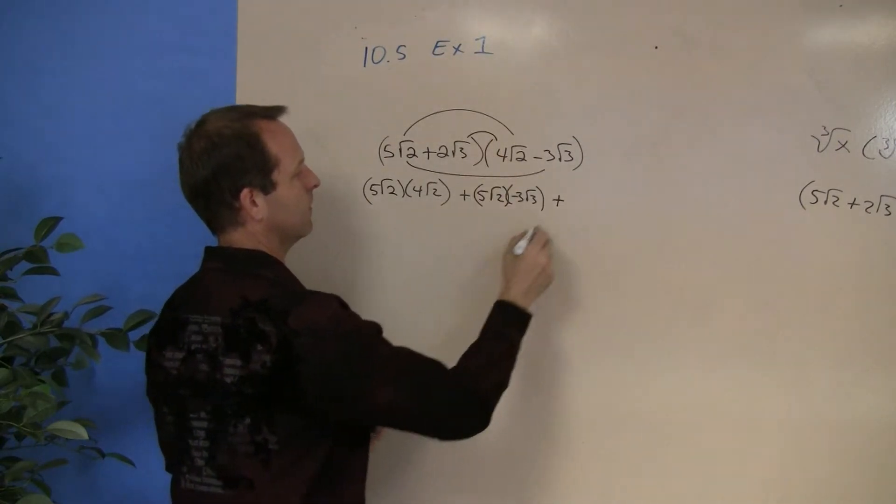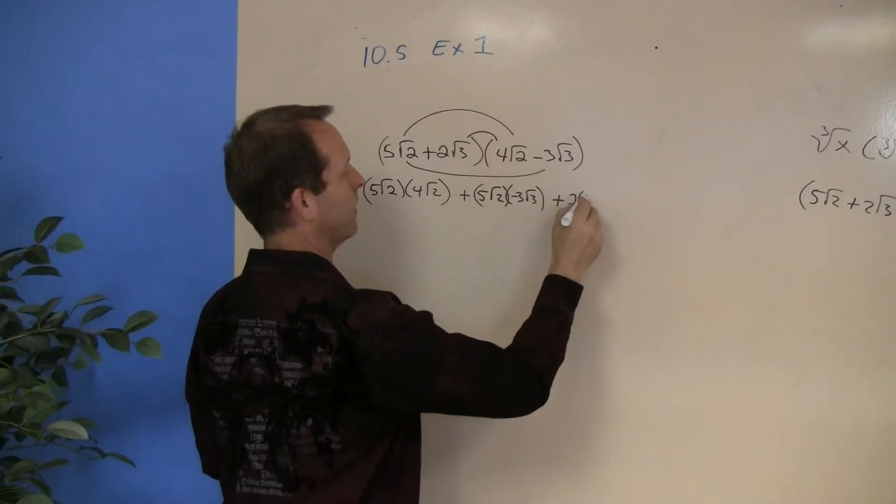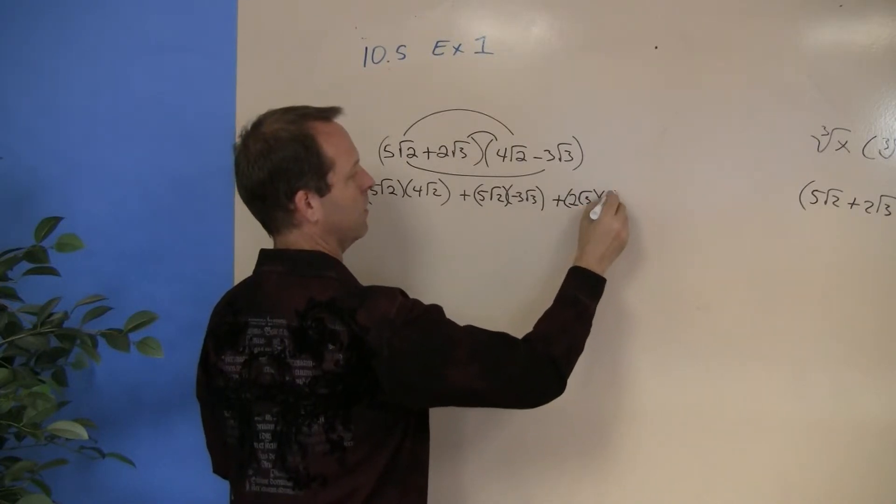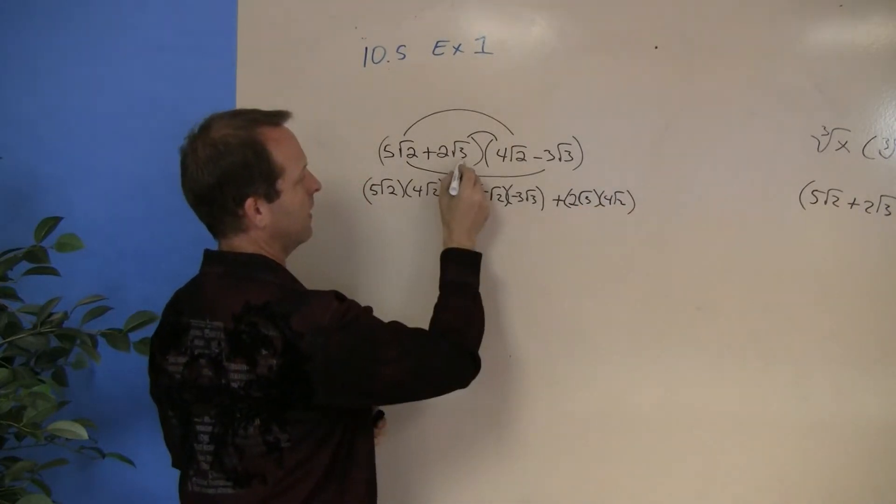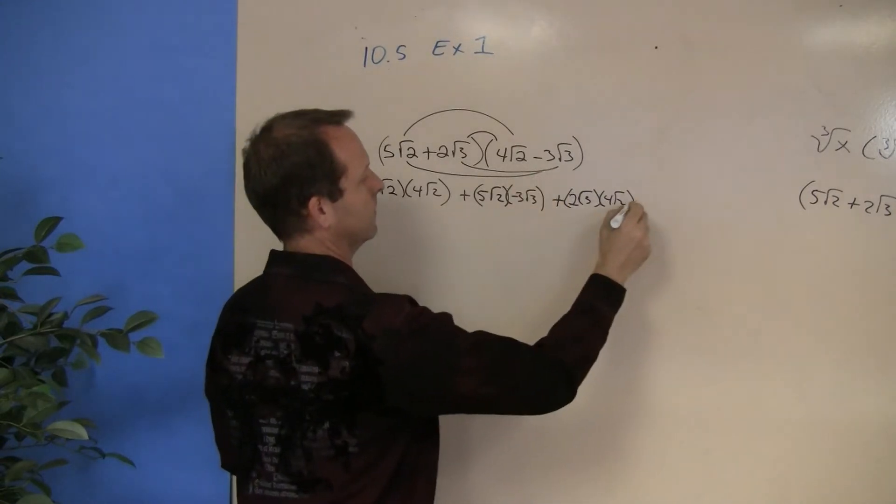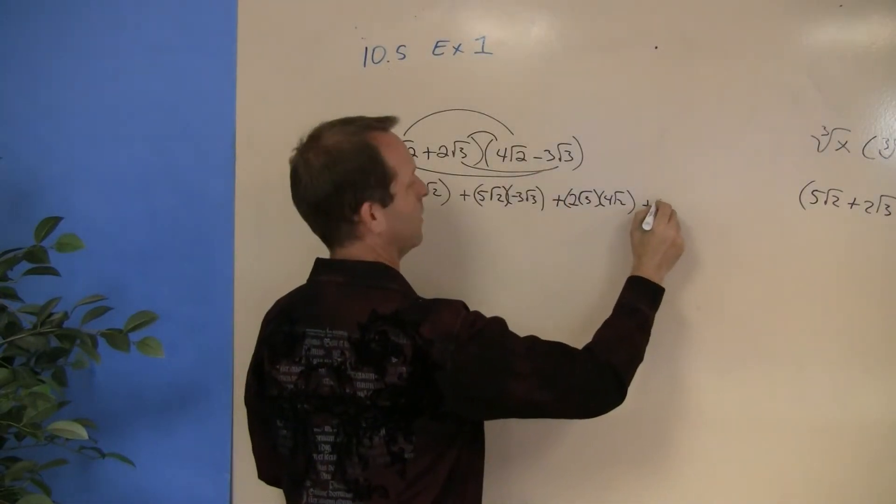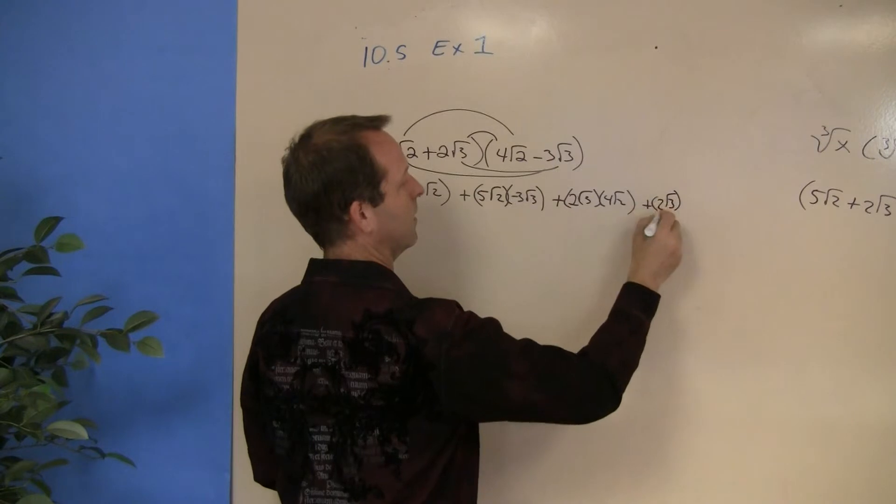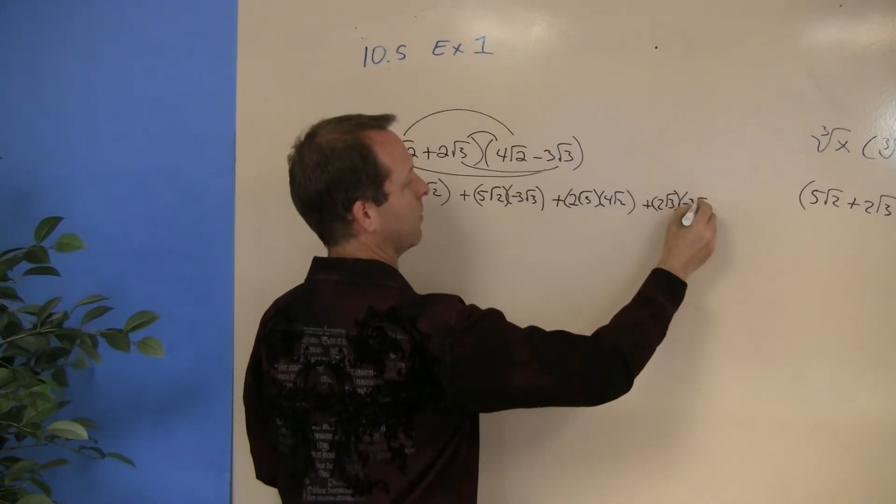The inner terms, 2 root 3 times a 4 root 2. And then the last terms, 2 root 3 times a negative 3 root 3.